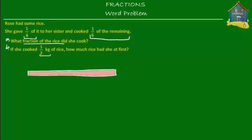Then what she did was she gave a quarter of it to her sister, which means that if she divided this whole rice into four equal parts, then one of those parts is one quarter and that's what she gave to her sister. So let's suppose that this is what she gave to her sister — the first one over here. This is one fourth of the rice. Let's color it purple. So this is what she gave to the sister and this is one fourth of the rice.